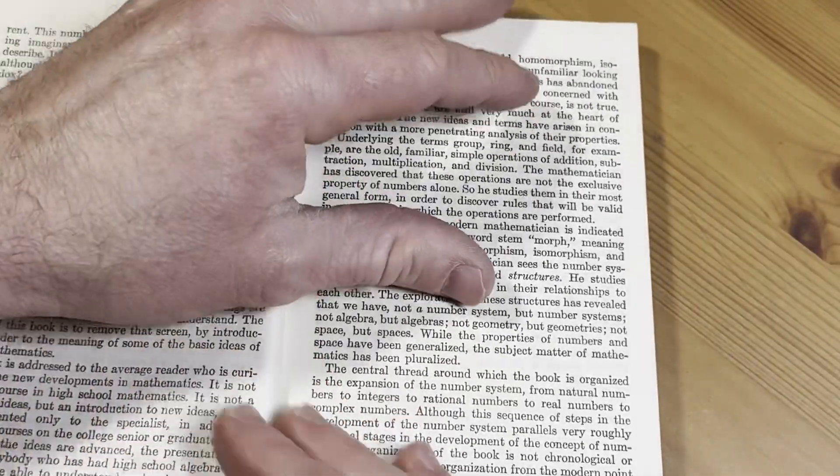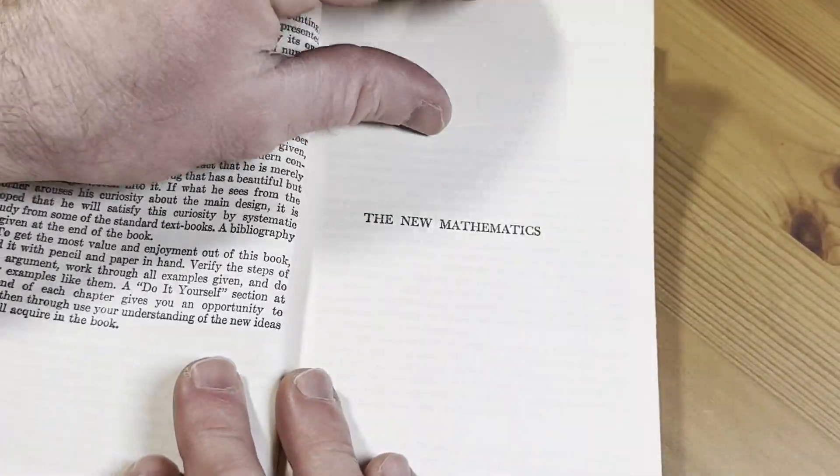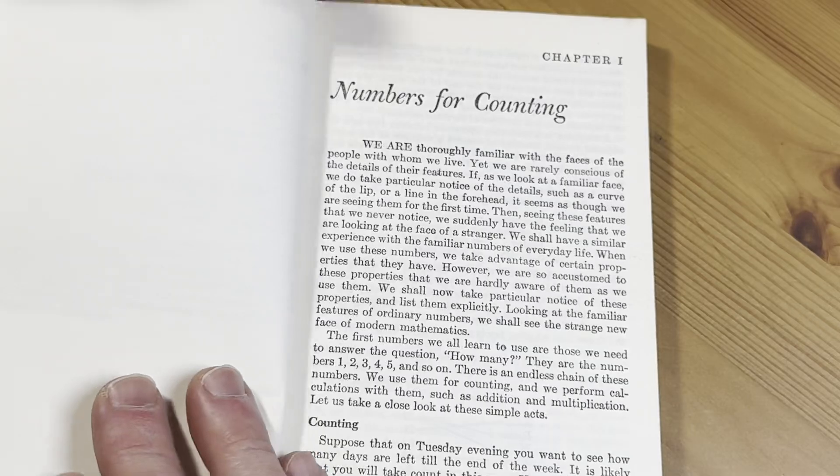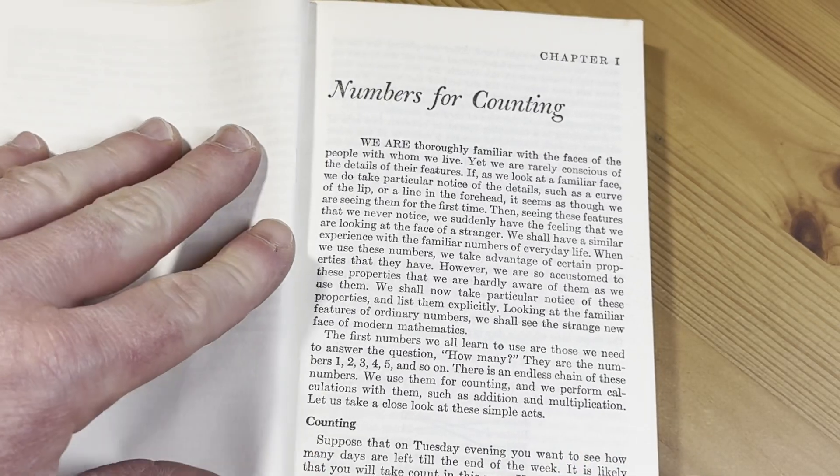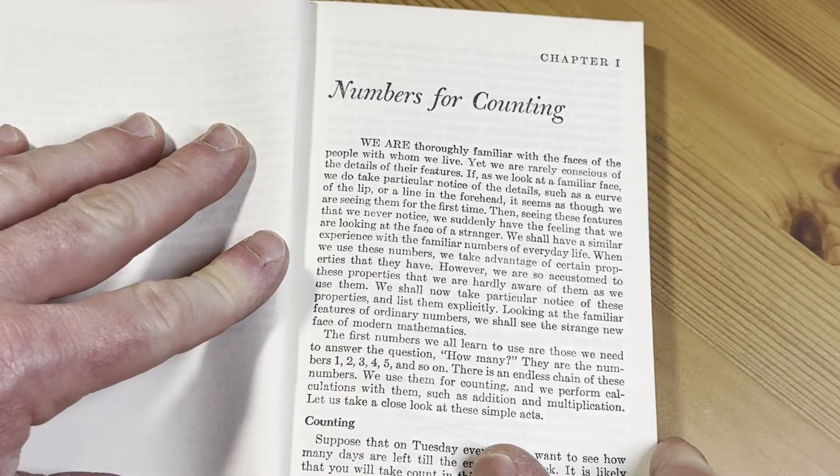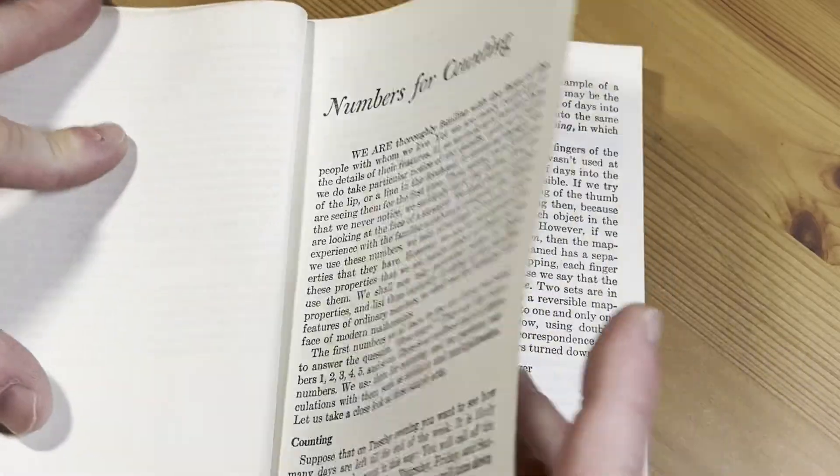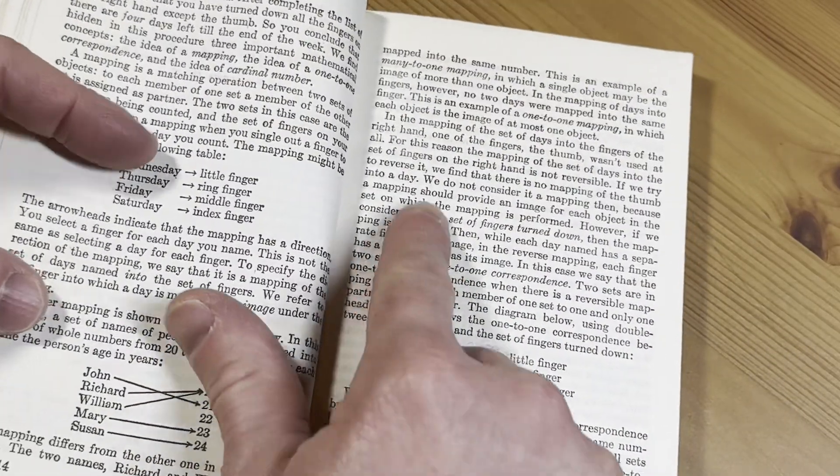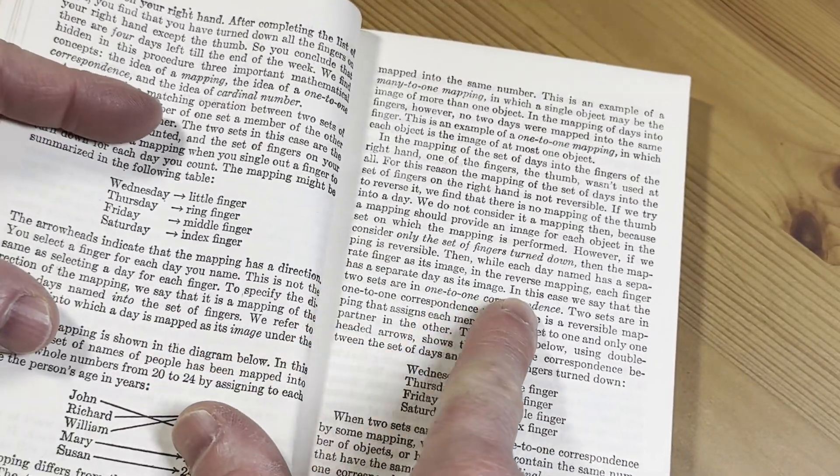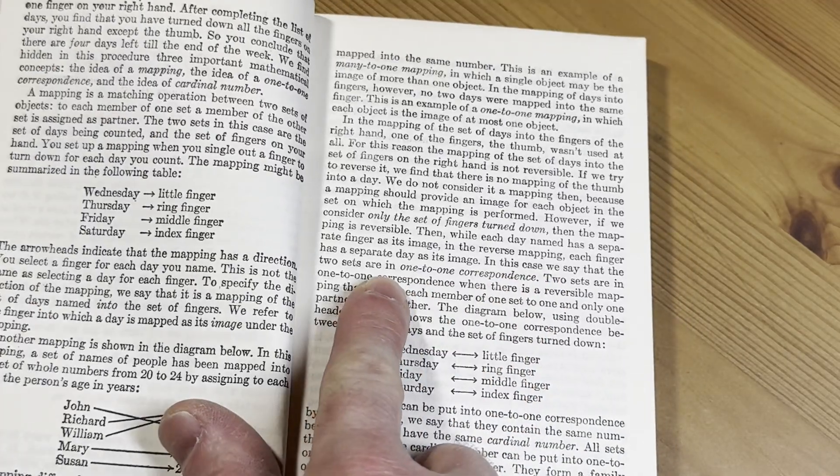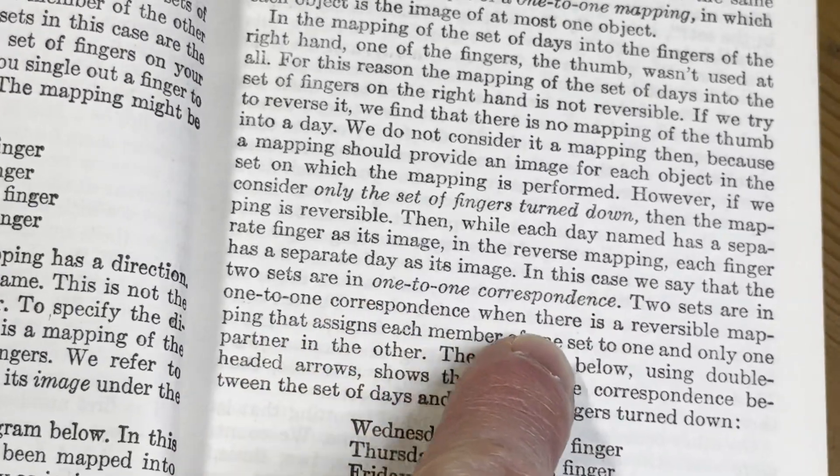Let's just go straight to the meat of the book so you can see a little bit more what it's about. So numbers for counting. This is where it starts. You can see. It talks about numbers and counting. And then right here you see already it's talking about, in this case we say that it is a, let me zoom in here, a one-to-one correspondence.